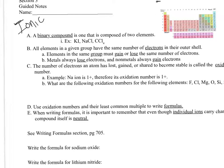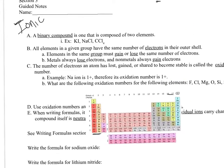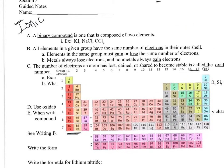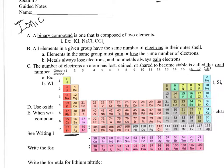All elements in a given group have the same number of electrons in their outer shell. Elements in the same group must gain or lose the same number of electrons to have a full outer shell. Metals are always going to lose electrons; non-metals will always gain. Metals only have one or two in their outer shell — they're not going to gain six or seven. Non-metals are close to having a full outer shell, so they gain.